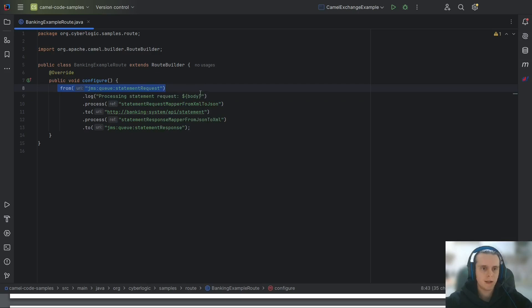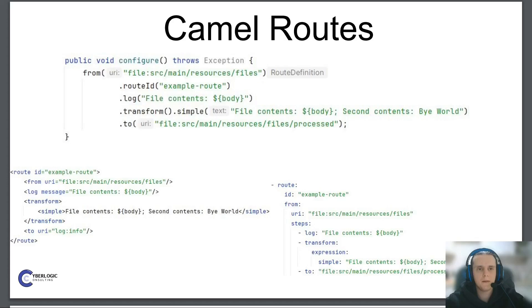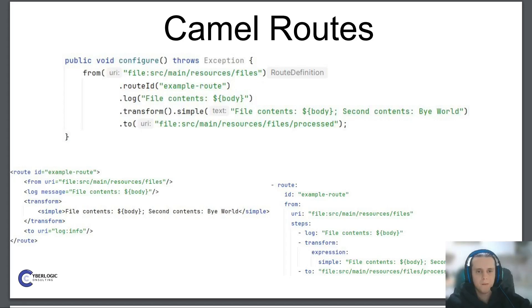We will learn more about components and how to write 'from' statements later in this video. After the 'from' statement, one or more processing steps follow. For example, 'log' and 'transform' processing steps — as you can guess, 'log' displays the message and 'transform' changes the message content. The last processing step is the 'to' DSL element, which sends the message to a destination such as a file system directory.